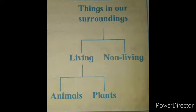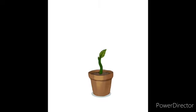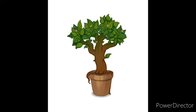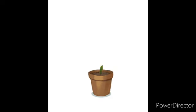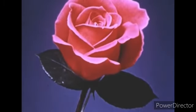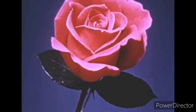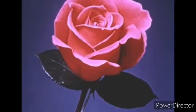Things in our surroundings form two groups: first, living things, and second, non-living things. Living things are of two kinds — animals and plants. Animals have babies, and seedlings grow from seeds, which then grow into plants. This tells us that plants are living things.